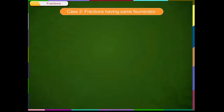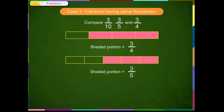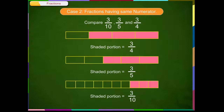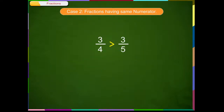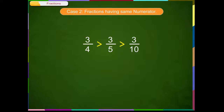Case 2: Fractions having the same numerator. For example, compare 3/10, 3/5, and 3/4. In comparison of fractions having the same numerator, the rectangular figures shown have the same lengths but are divided into different parts to show different denominators. From the rectangles shown on the screen, we can say that 3/4 has more shaded portion. So, 3/4 is greater than 3/5 is greater than 3/10. In fractions having the same numerator, the fraction with the smaller denominator is greater.